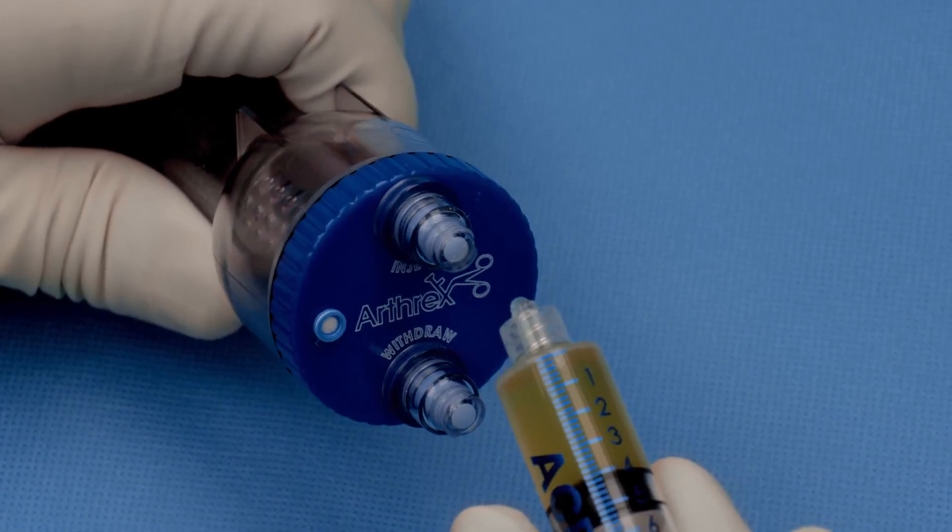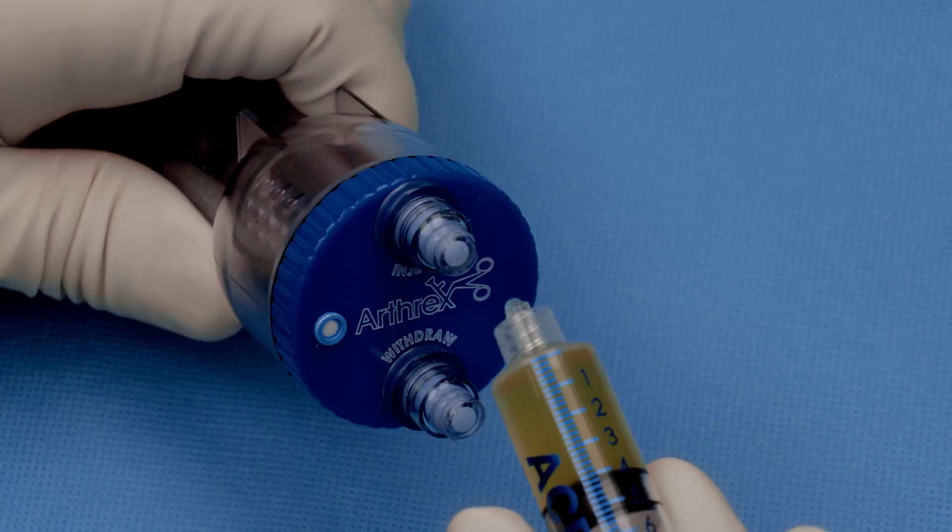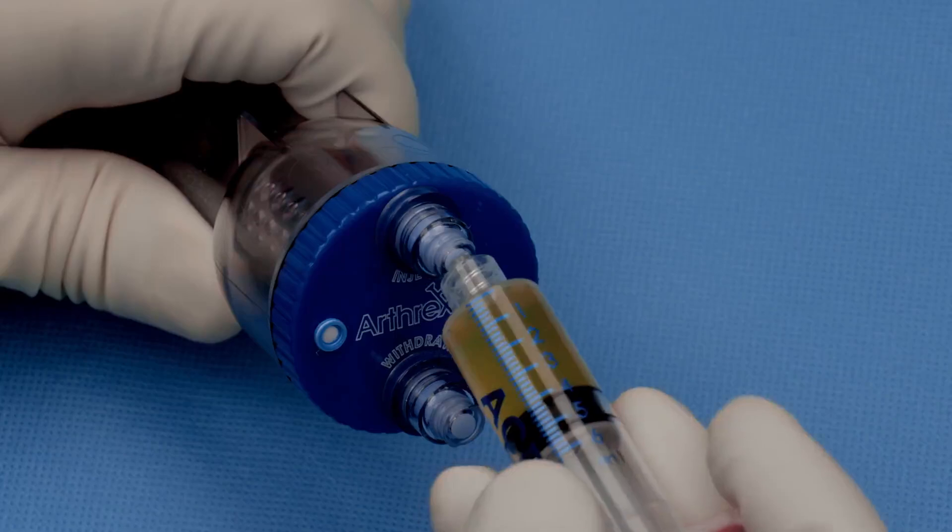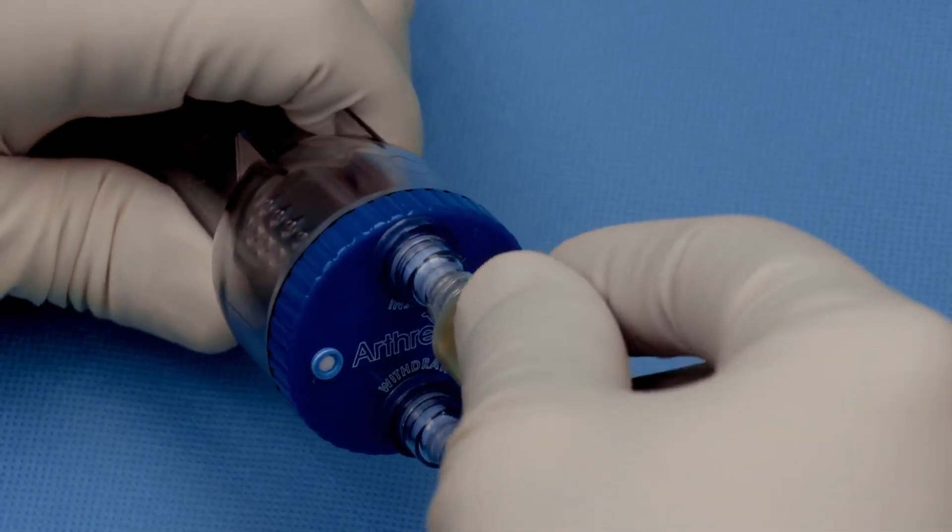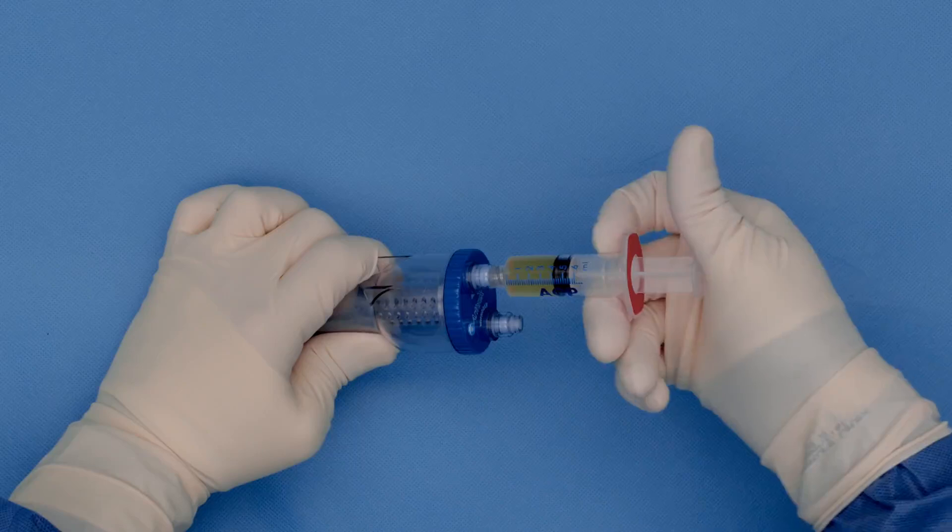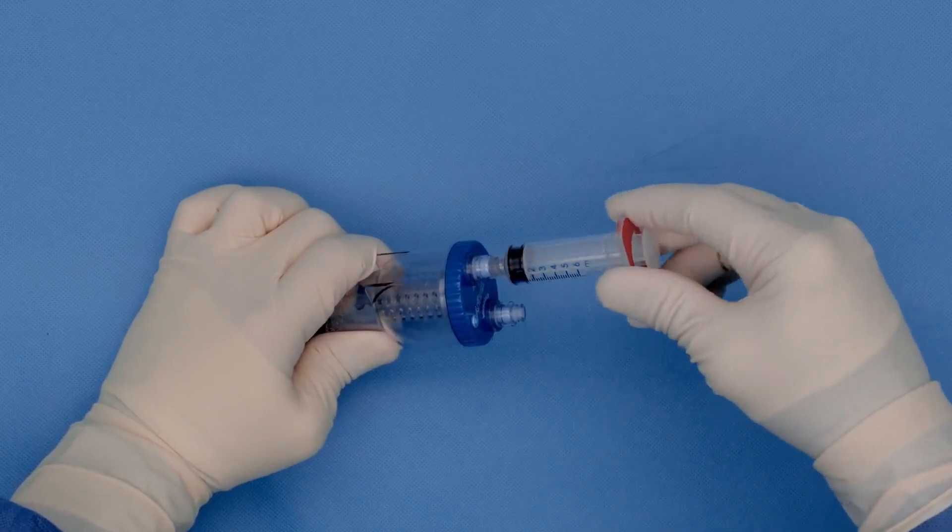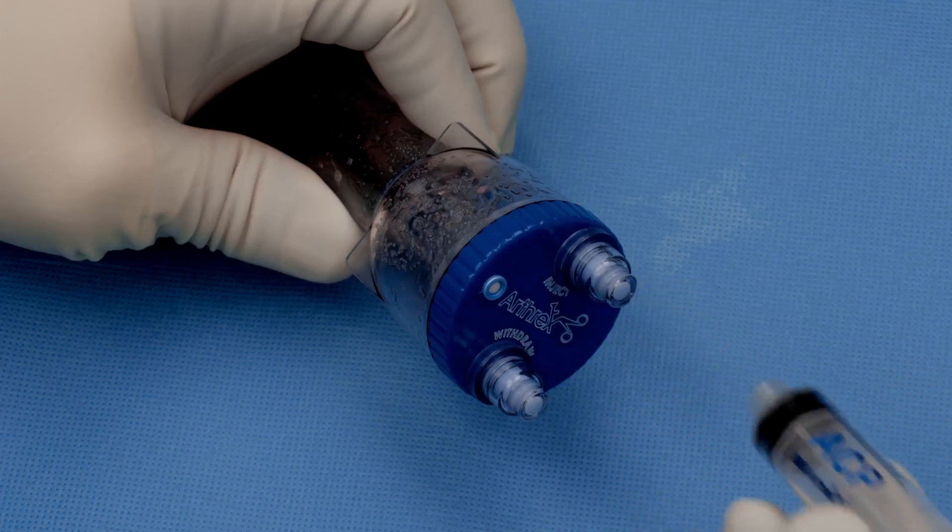During our first step of thrombin production, we are connecting our ACP syringe to the injection site of the thrombinator. And then we are directly applying 4 ml of the ACP into the thrombinator. Then you take away the ACP syringe.